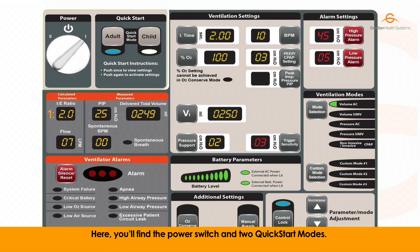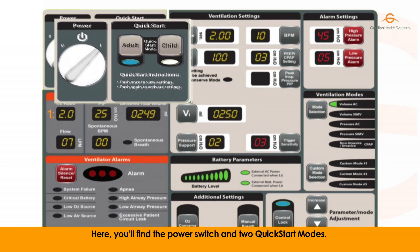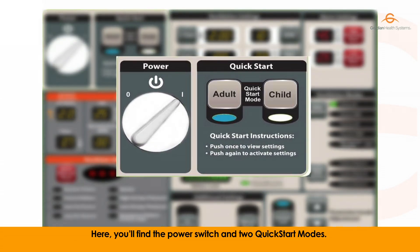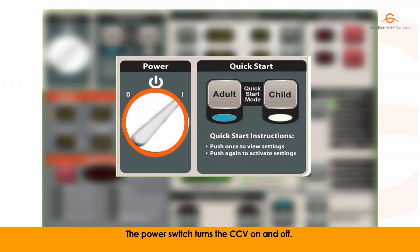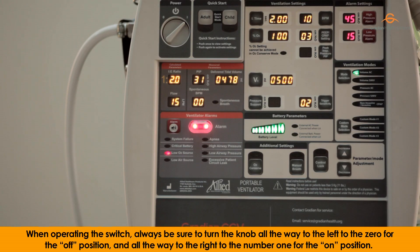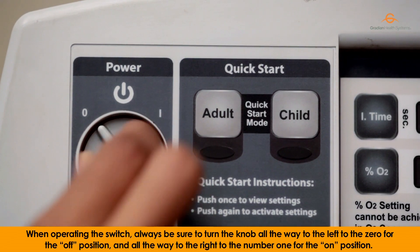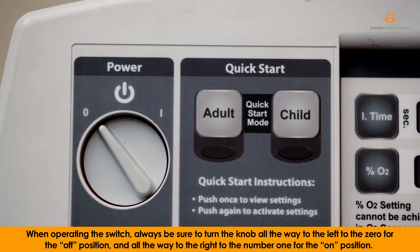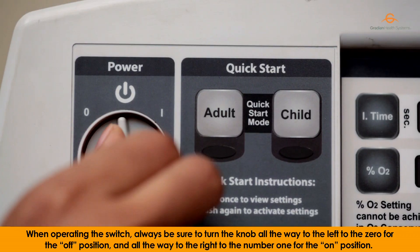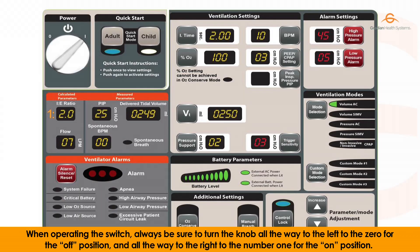Here you'll find the power switch and two quick start modes. The power switch turns the CCV on and off. When operating the switch, always be sure to turn the knob all the way to the left to zero for the off position and all the way to the right to the number one for the on position.